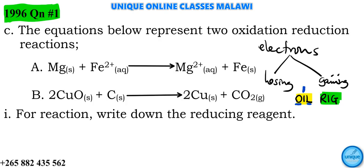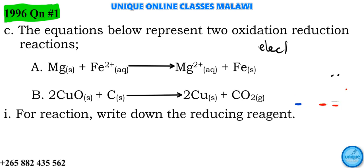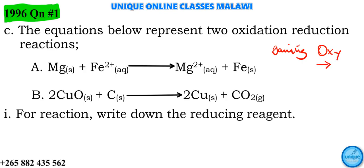So losing of electrons is oxidation, and gaining of electrons is reduction. In terms of oxygen atoms, gaining of oxygen means oxidation, whereas losing of oxygen atom means reduction.